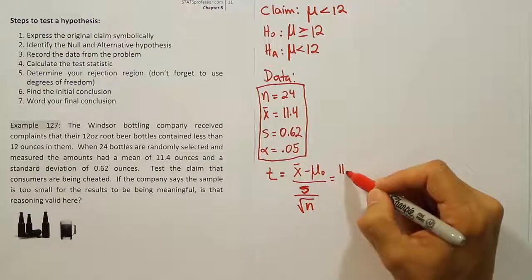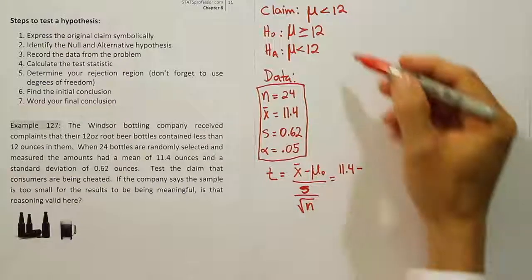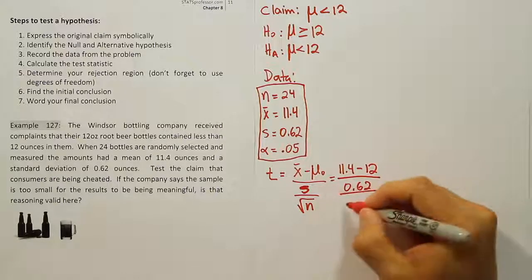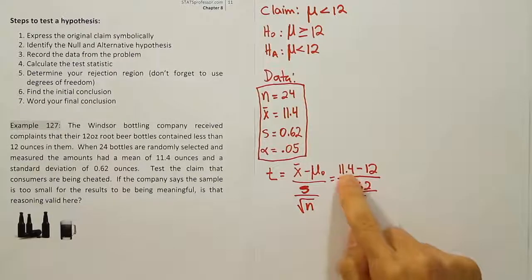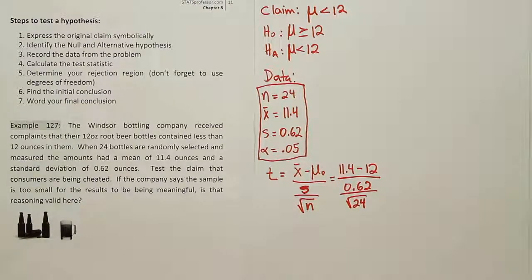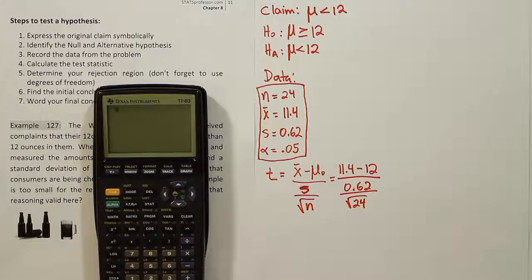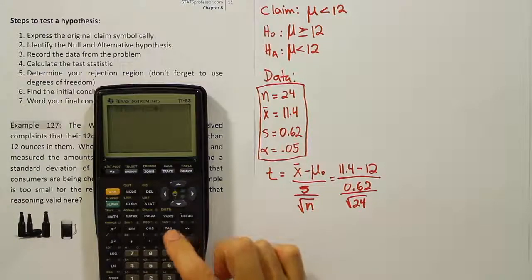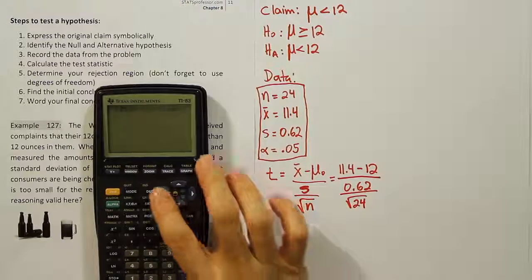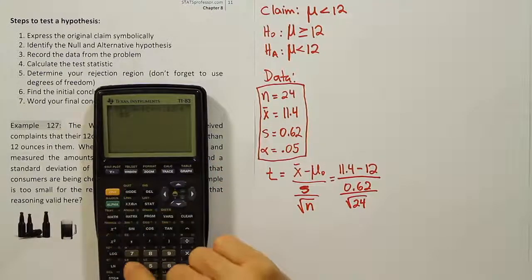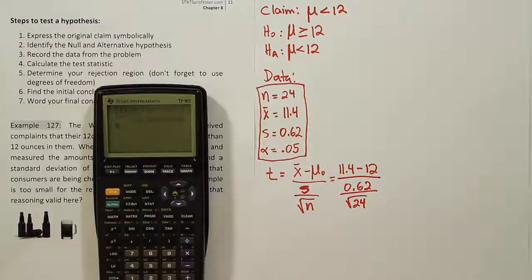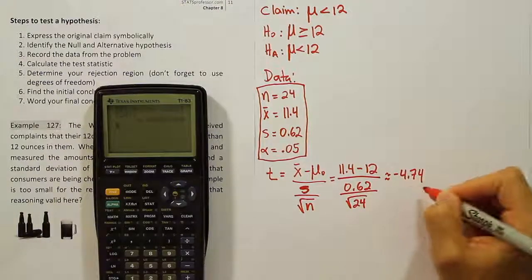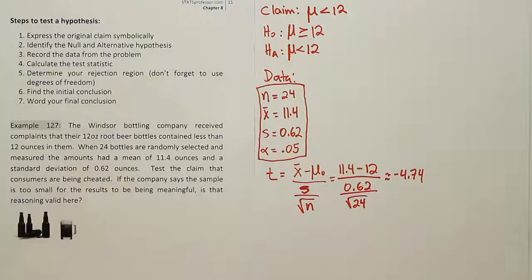So the sample mean is 11.4. The value that we find in H₀ is 12. The standard deviation is 0.62 and we're dividing by the square root of 24. Let's see if the difference between 11.4 ounces and 12 ounces is significant here. So we're going to put the top in parentheses, 11.4 minus 12, close it up, divide by the bottom in parentheses, 0.62, divided by the square root of 24. When we do that, we get minus 4.74. That's pretty extreme. Minus 4.74. That's a pretty extreme test stat indicating that perhaps the company is cheating the consumer.